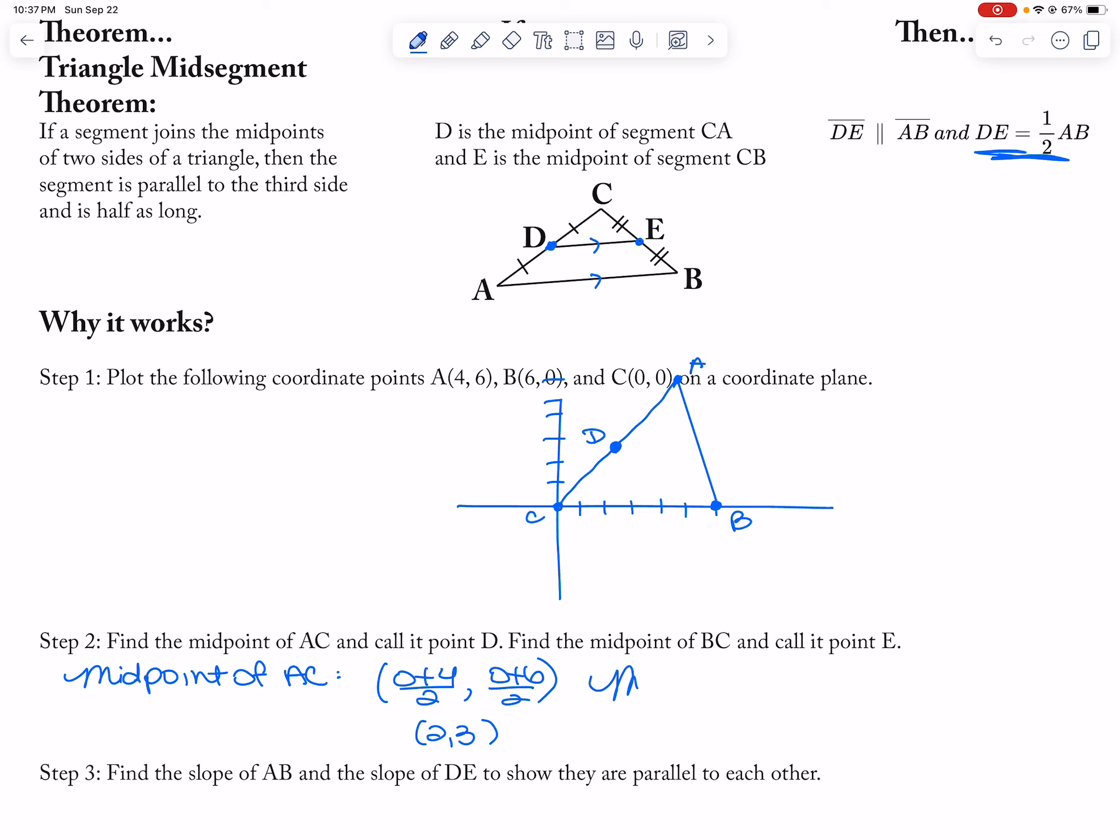Okay, and then I want the midpoint of BC, which we're going to call E. So that is 0 plus 6 over 2 comma 0 plus 0 over 2, which is 3 comma 0. So we're going to call that E.